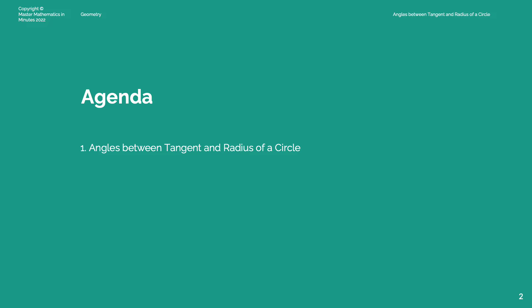Welcome to Master Mathematics in Minutes. Today's topic is about angles between tangent and radius of a circle. We will cover a couple of examples on how to calculate angles of tangent and radius, and we will conclude the topic with a summary.